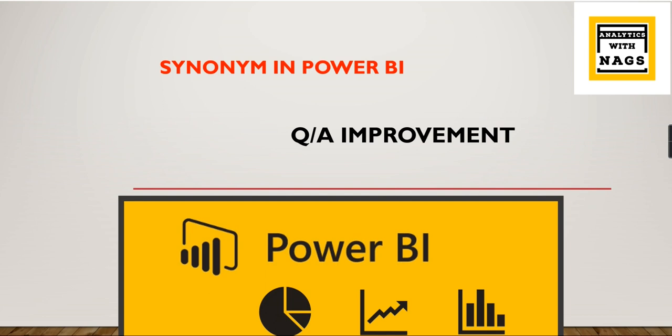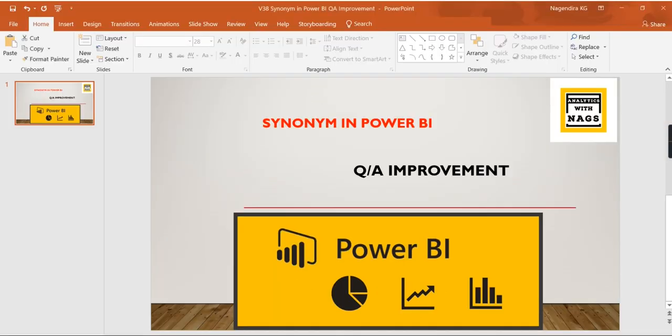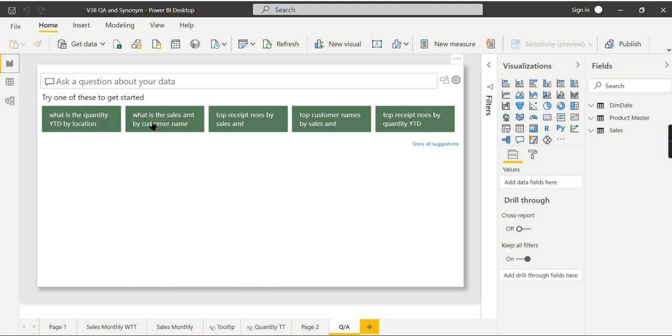If you're new to the channel, hit the subscribe button and press the bell icon for notifications. To give a quick idea about synonym — you have a model and in your model you have a field called sales amount. But instead of sales amount, people in your organization refer to it as item amount, or it could be terminology from your client. So if they search using 'what is my total item amount,' it will not fetch the results. You need to map sales amount to item amount — this is what the synonym will do.